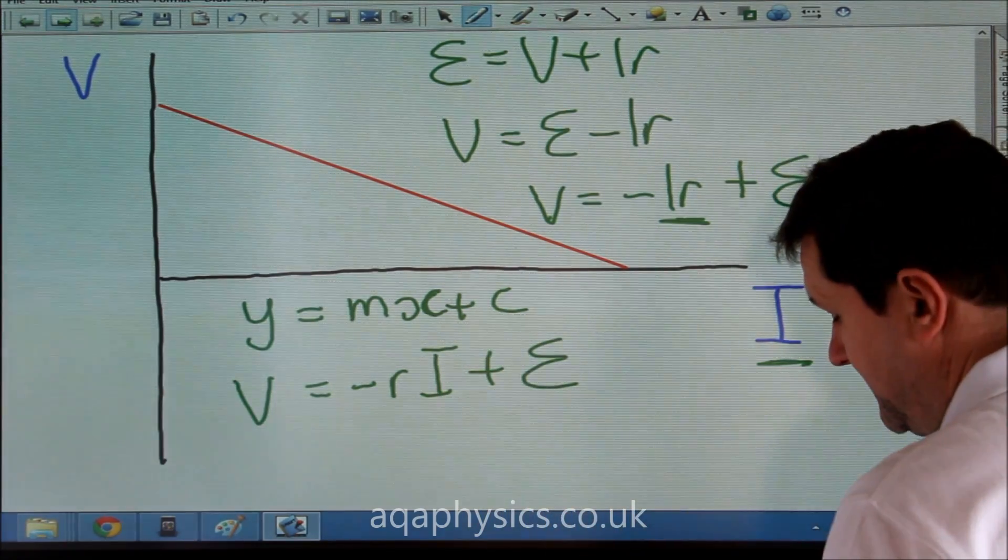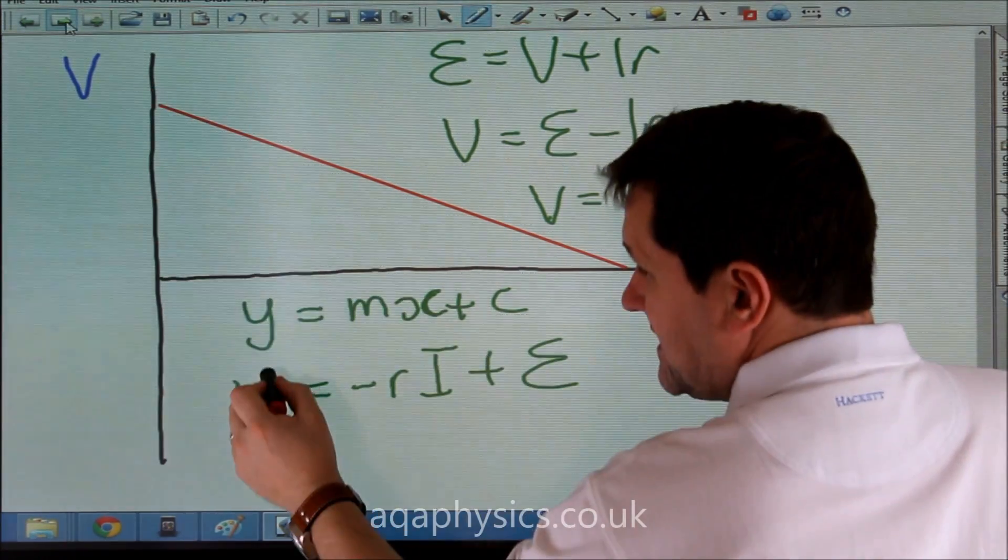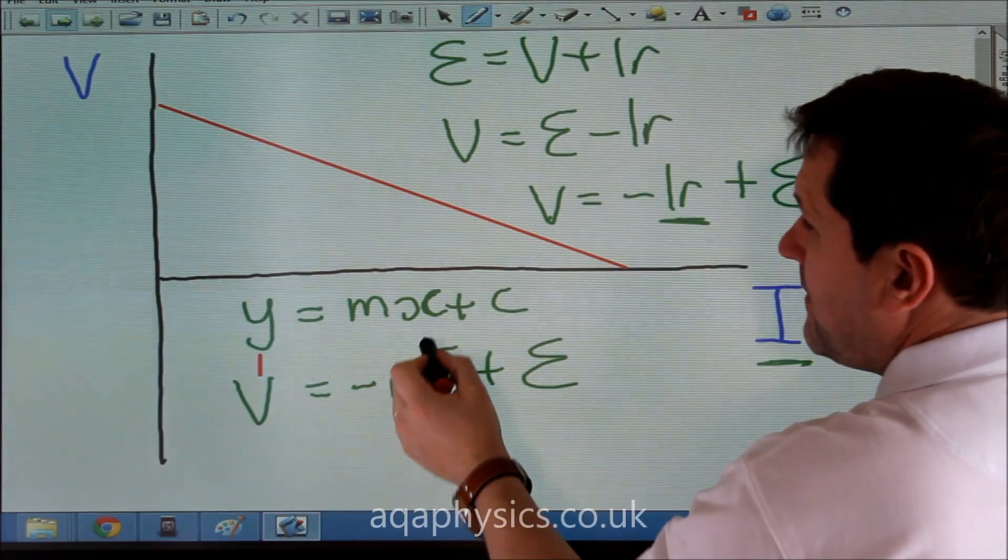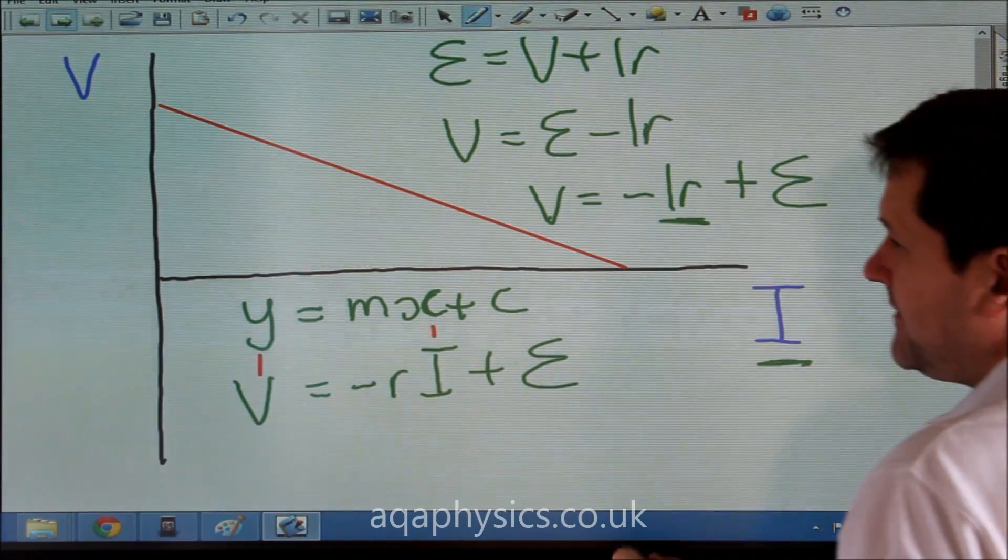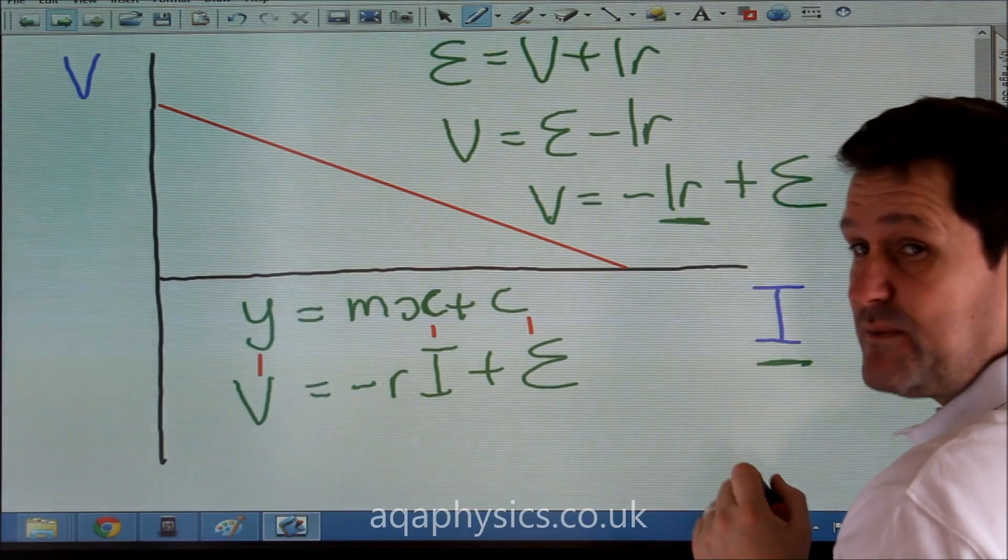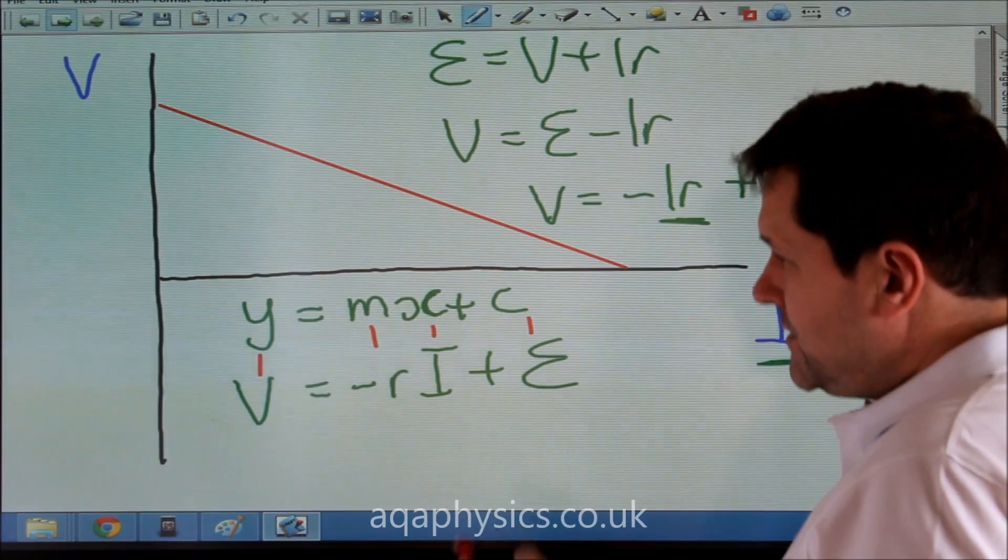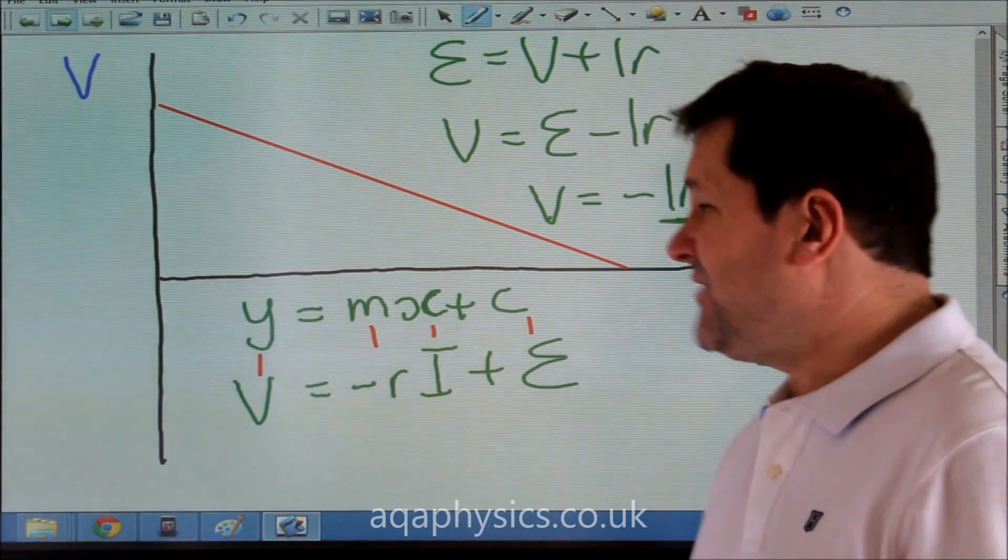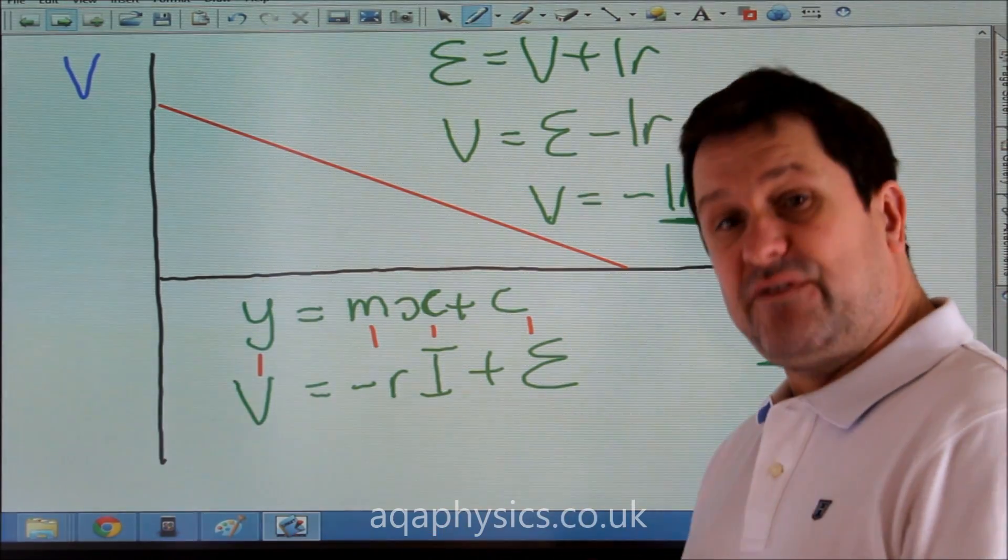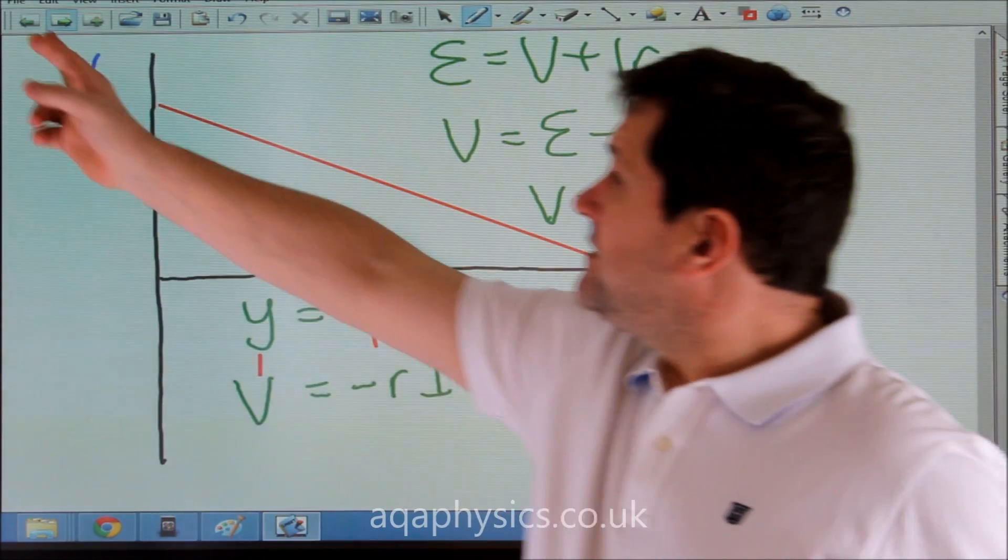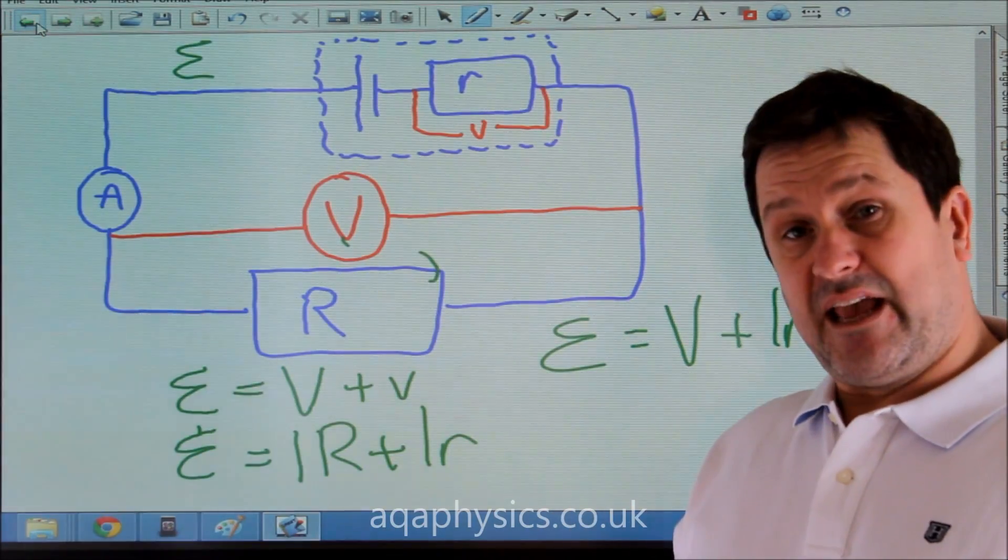We can see the Y axis is V. The X axis is I. And C here will correspond to the EMF of my battery. And M will correspond to minus R. So we could use our graph then to calculate different things about this circuit here.